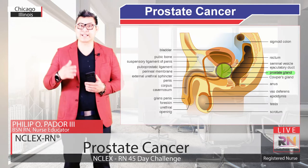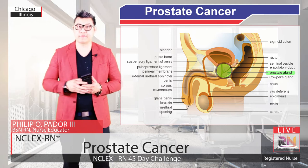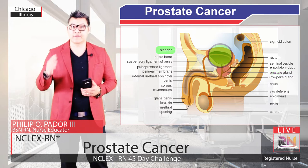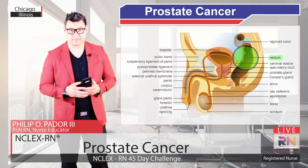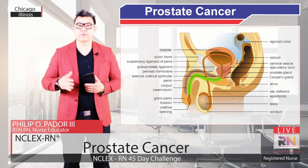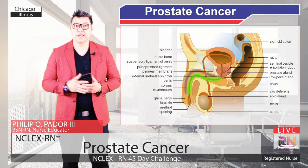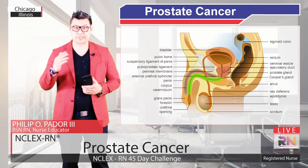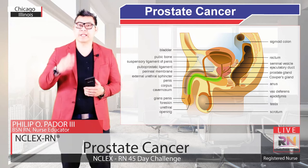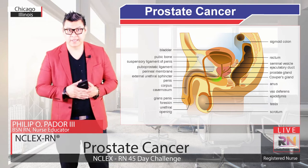The prostate is a small gland about the size and shape of a walnut that sits under the bladder and in front of the rectum. The urethra, which is the tube through which urine leaves the bladder, goes through the prostate before reaching the penis. That part of the urethra is called the prostatic urethra.